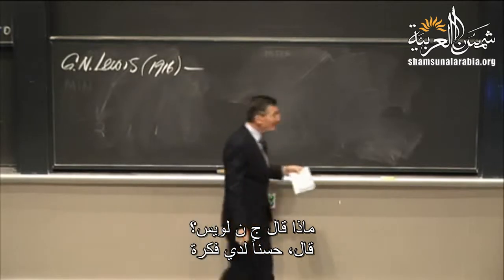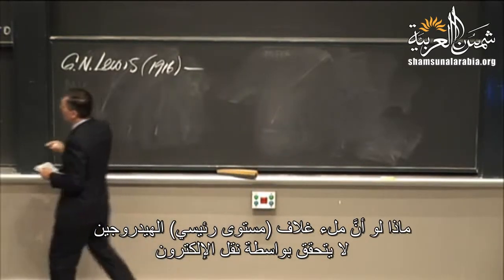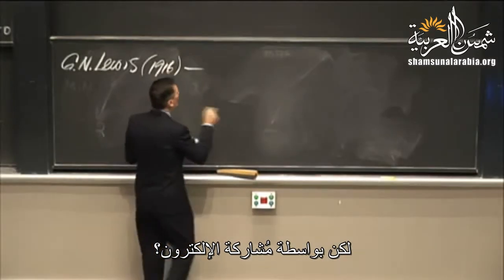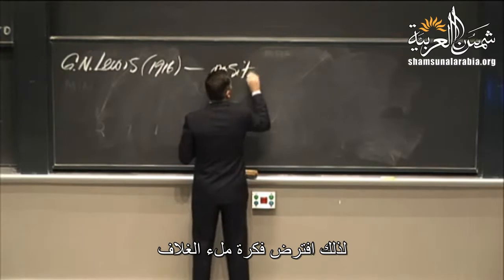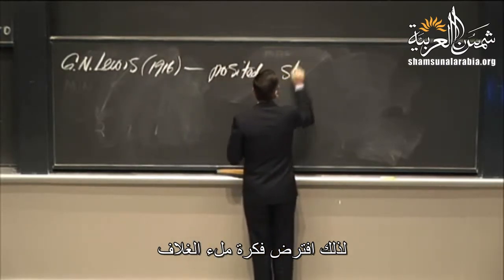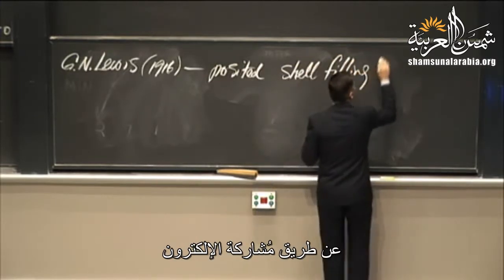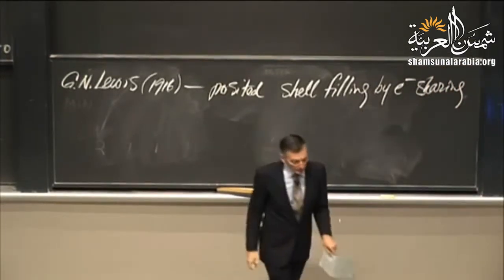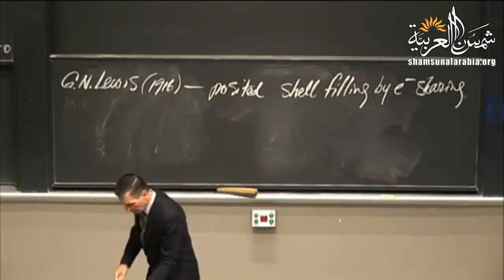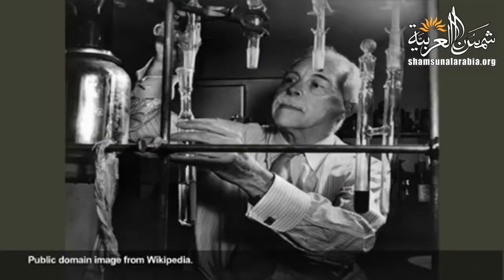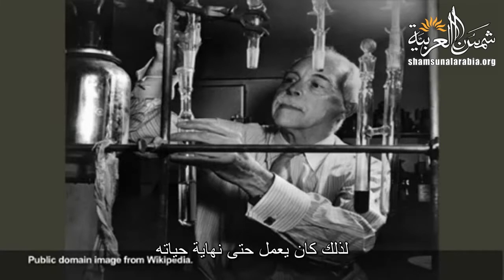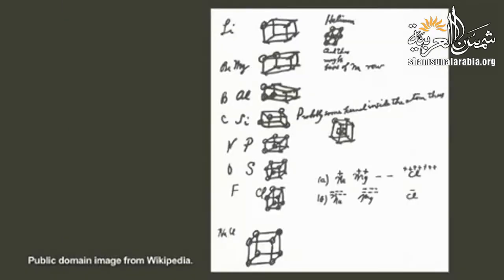What did G.N. Lewis say? He said: what if hydrogen achieved shell filling not by electron transfer, but by electron sharing? He posited the idea of shell filling by electron sharing, in contrast to electron transfer. And here's some data taken from a lab notebook and memo from 1902 — he developed a notation we still use to this day, Lewis notation.